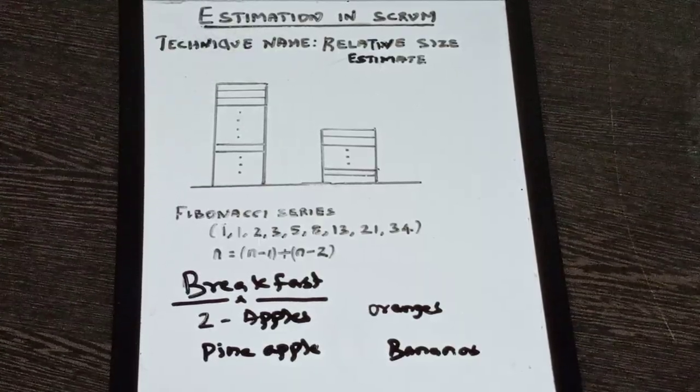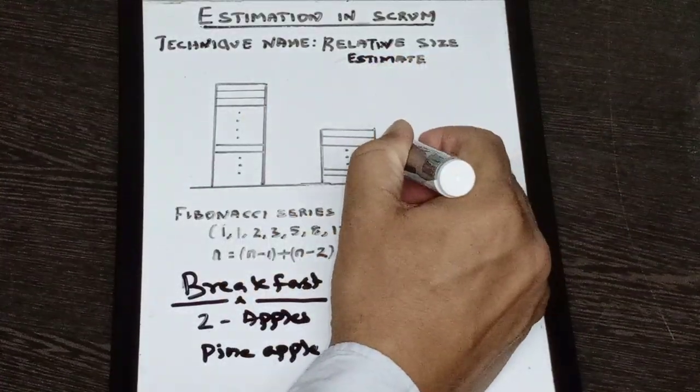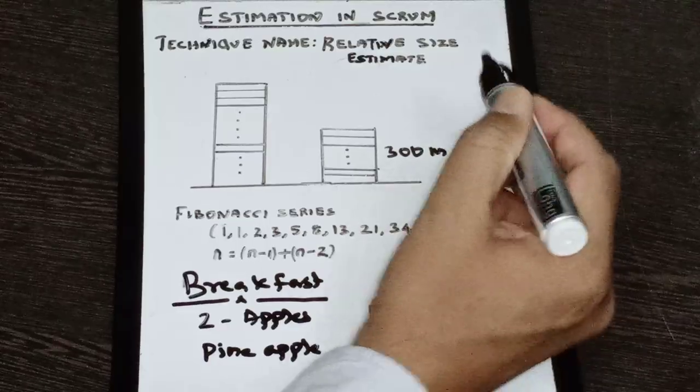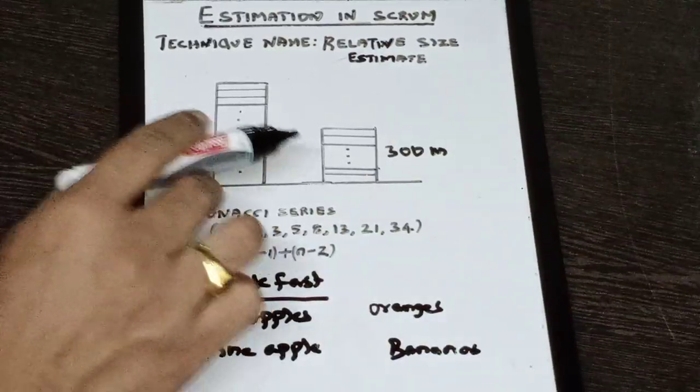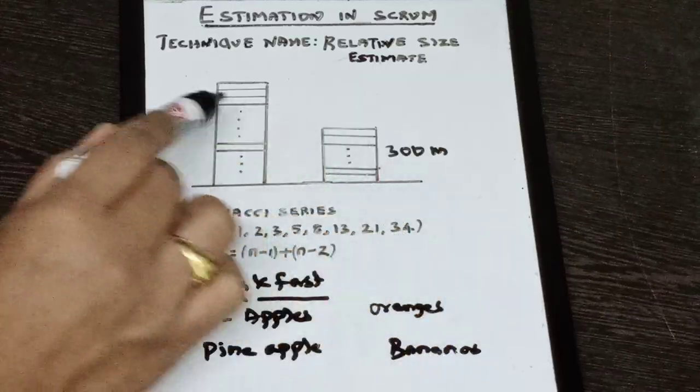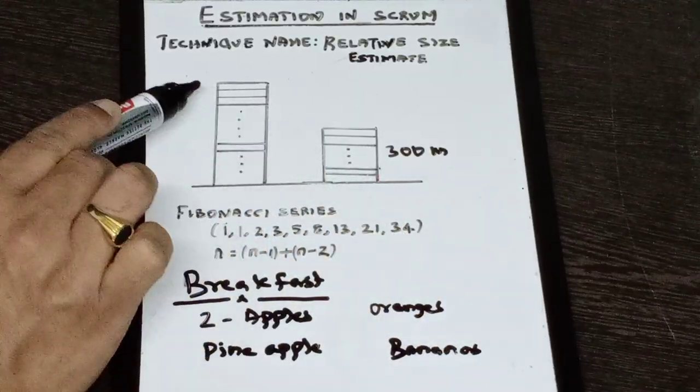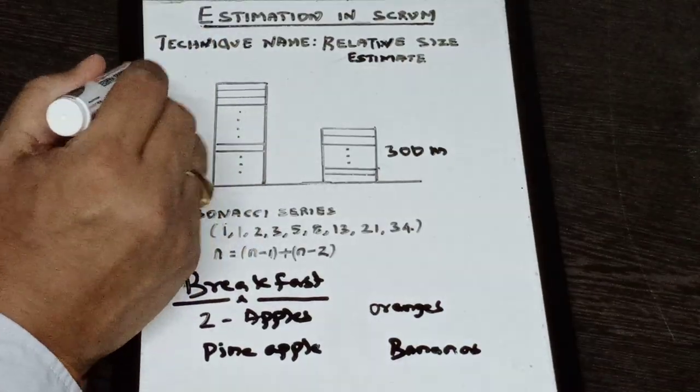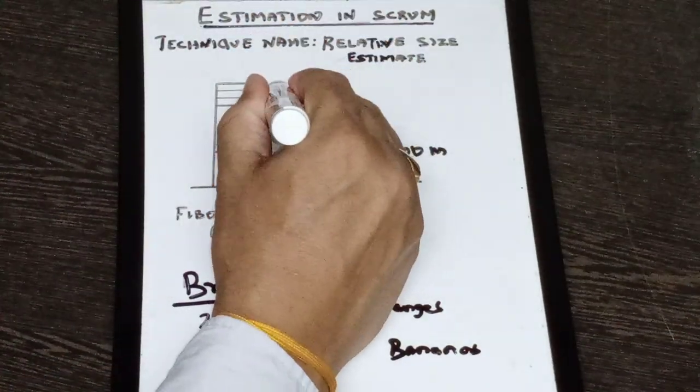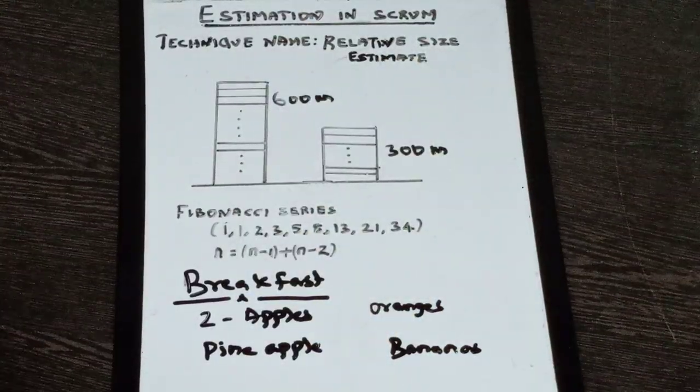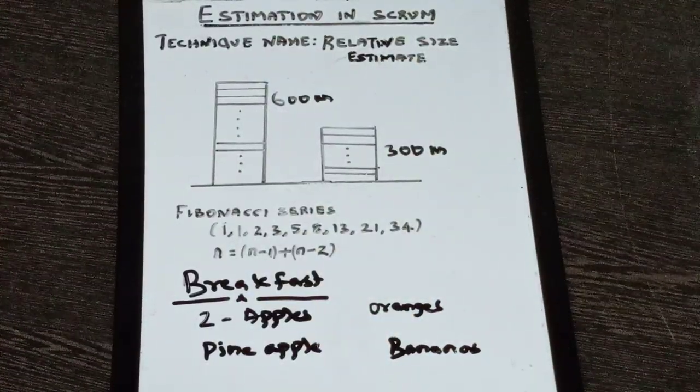For example, imagine the height of this particular building is 300 meters. Now, if this building is 300 meters, we use this as a reference and this building is two times taller than that. We can be able to tell this building is approximately 600 meters and this is called relative size estimate.